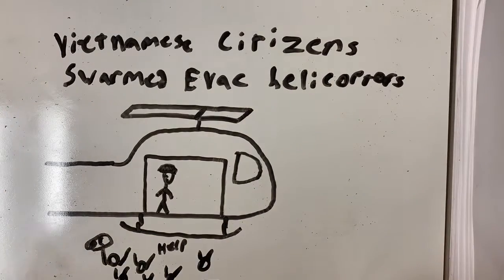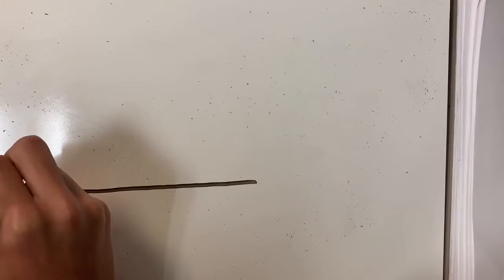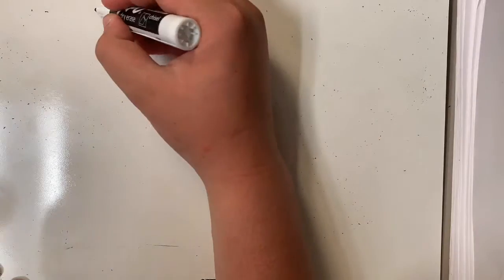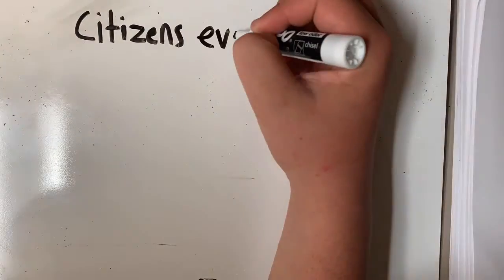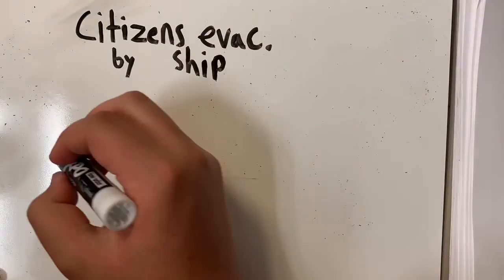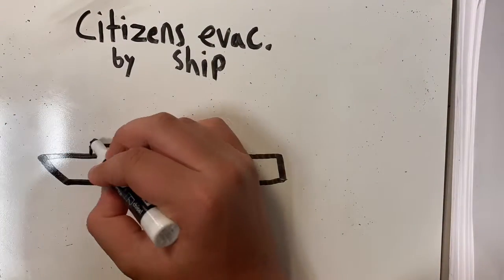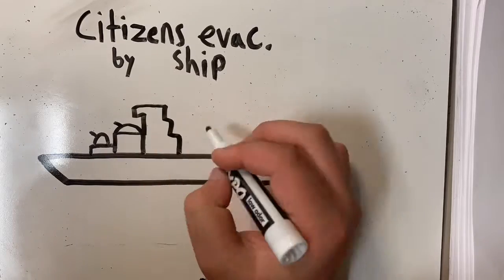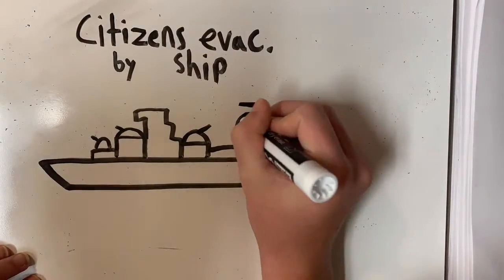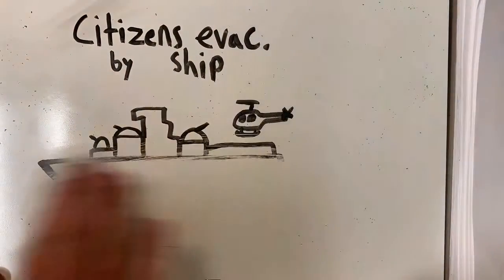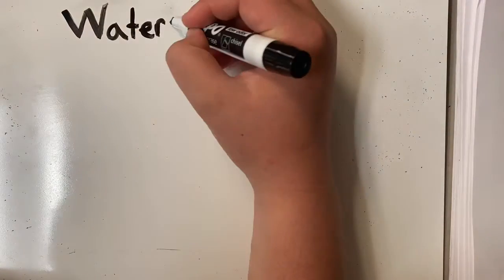Helicopters were crowded and packed full of people. Those helicopters would be flown to ships where the people would be put on until they could be shipped to the US or other foreign countries, like the Philippines. They were so anxious to get citizens on board that they didn't even bother moving the helicopters — they just pushed them into the ocean. Some ships were cluttered with thousands of people.